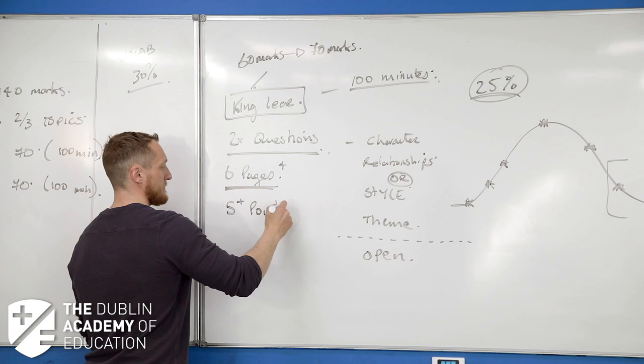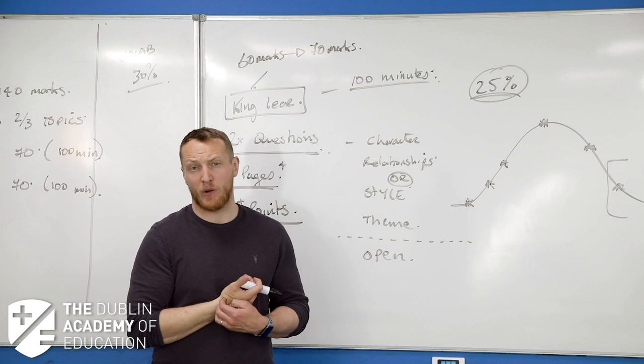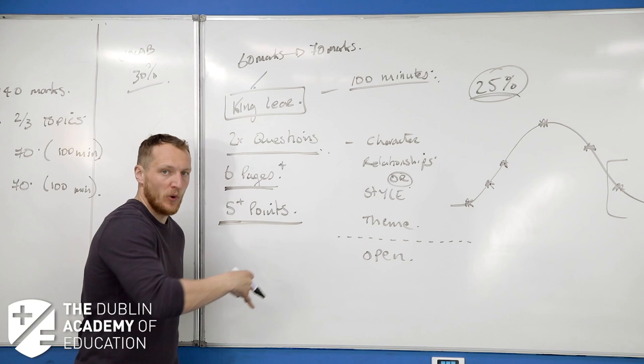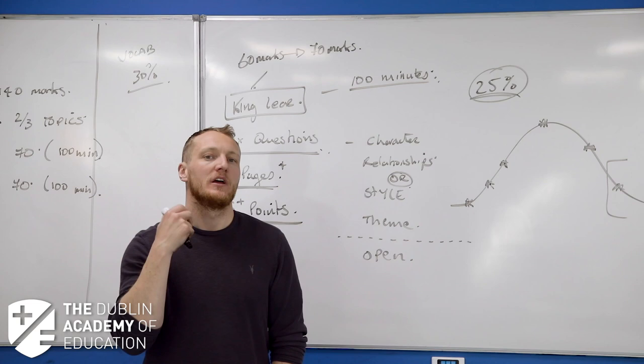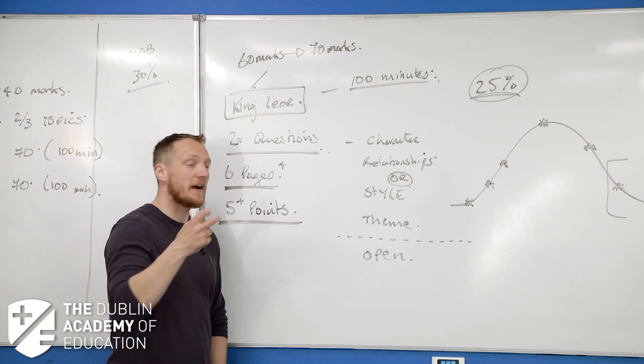I know this sounds kind of paradoxical, but the weaker you are, you might need to put in an extra point because then you have to write less on each individual point. If you can get five solid arguments plus your half an A4 page introduction plus your 10 to 20 line conclusion, you're in a very good space.